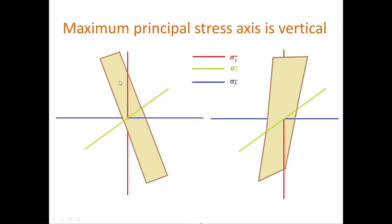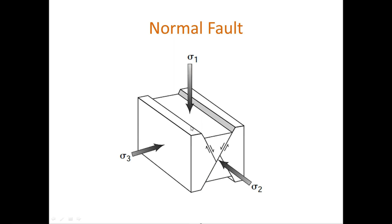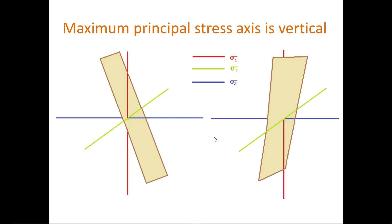So there are two possible fault planes for this condition — that is when the maximum principal stress axis is vertical. When the fault planes are oriented like this, we encounter a normal fault. This is sigma one, sigma three and sigma two horizontal, sigma one is vertical. These are the two possible fault planes making a 30-degree angle with respect to sigma one, and we can see it is forming the normal fault. The normal fault or gravity fault results when the maximum principal stress axis is vertical.